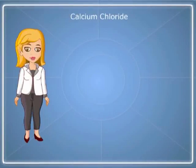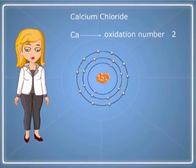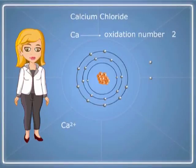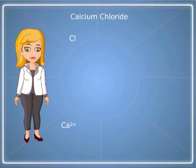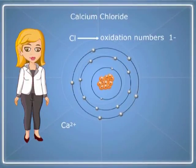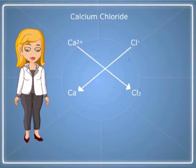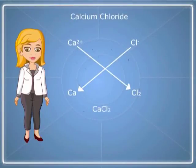Let us write the formula of calcium chloride. First, determine the oxidation numbers for the two elements. As calcium is in group 2, its oxidation number is 2. Elements in group 2 tend to lose the two electrons in the outer energy level, leaving the ions with positive charges. Chloride is in group 17, so its oxidation number is minus 1. Elements in group 17 have 7 electrons in the outer energy level and tend to gain 1 electron. The ions are negative. Now criss-cross the numbers, writing the oxidation number of one element as the subscript for the other. Reduce the subscripts to their simplest form by dividing by a common denominator. The formula for calcium chloride is CaCl2.